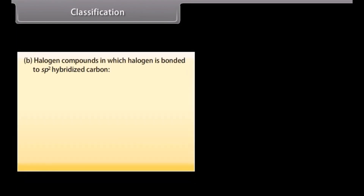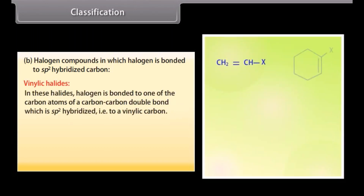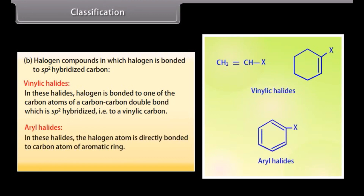Halogen compounds in which halogen is bonded to an sp2 hybridized carbon: In these halides, halogen is bonded to one of the carbon atoms of a carbon-carbon double bond which is sp2 hybridized, that is, to a vinylic carbon. Aryl halides: In these halides, the halogen atom is directly bonded to a carbon atom of the aromatic ring — for example, halobenzene.